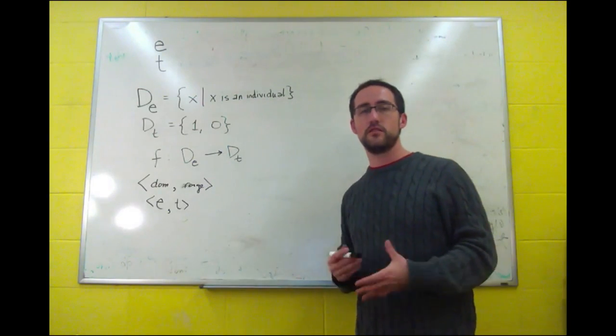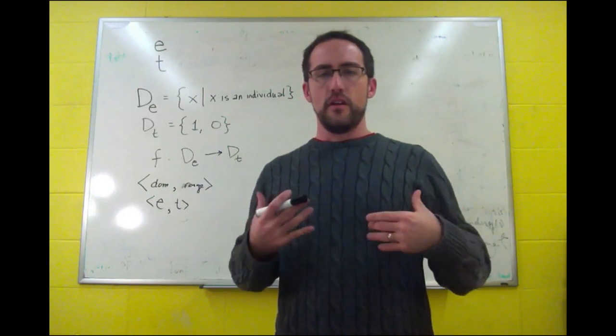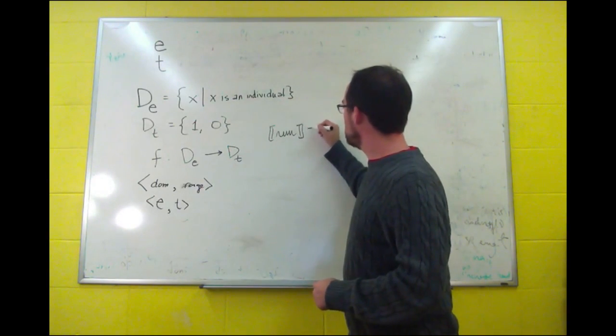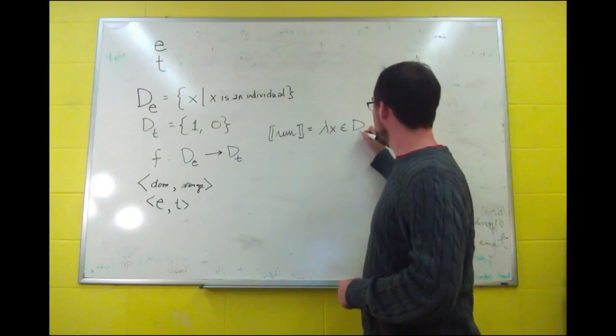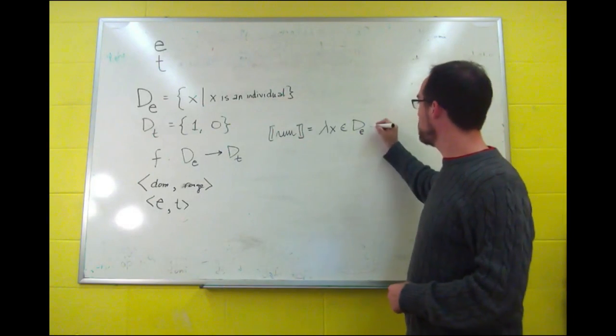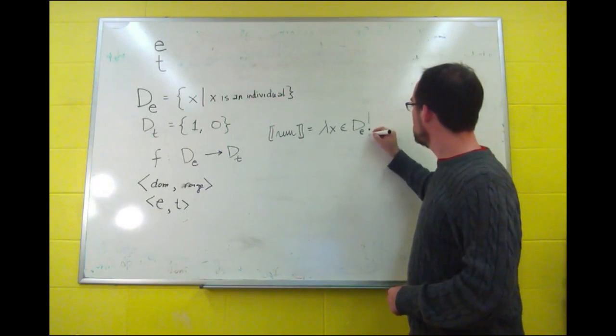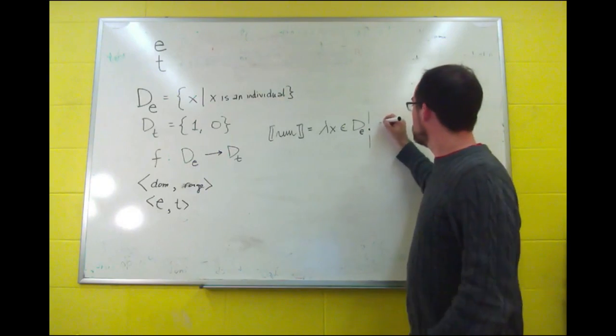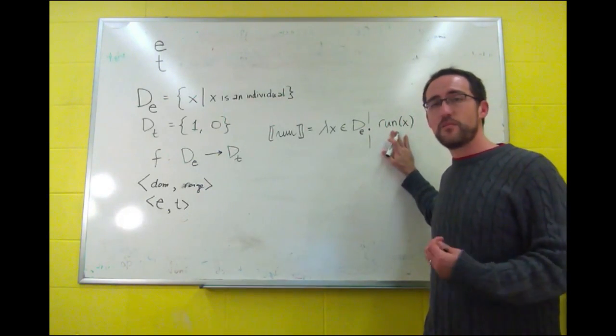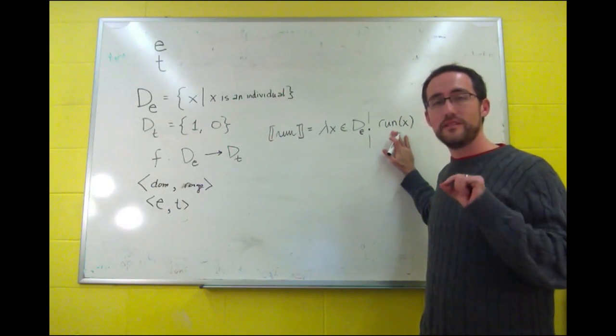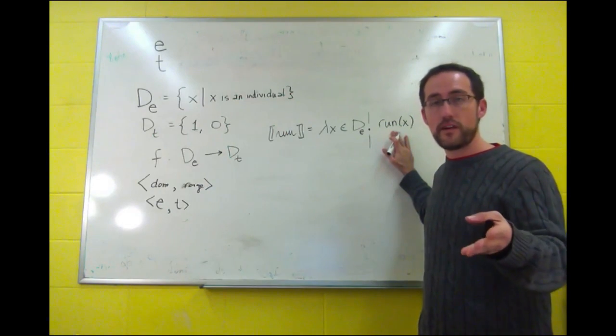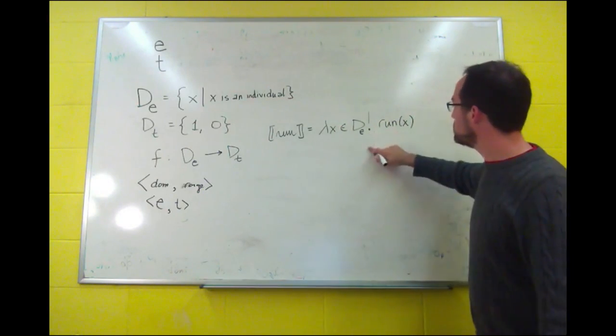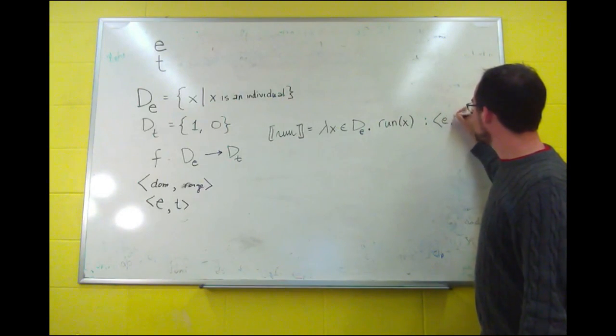We can define our functions in terms of that. If you look at an example like run, the verb run is a function from the domain of individuals. So it takes something of type E and gives you something of type T. You say run of x, and remember that is an abbreviation: 1 if x runs, 0 if x doesn't. The truth values. So this will be of type T, and so this function is of type E, T.